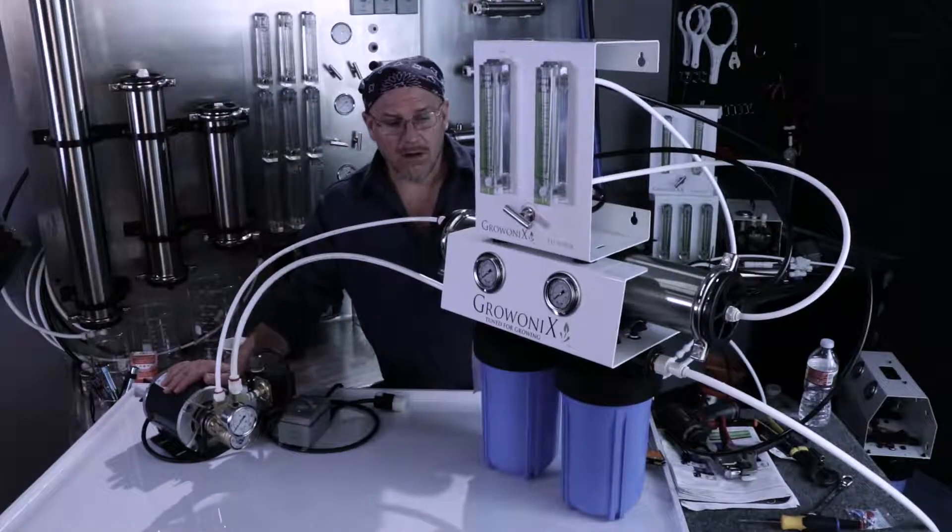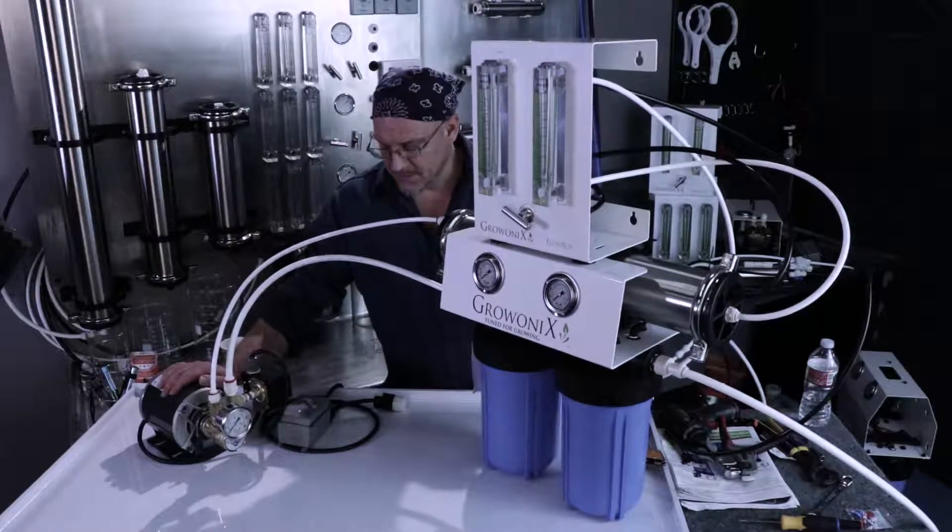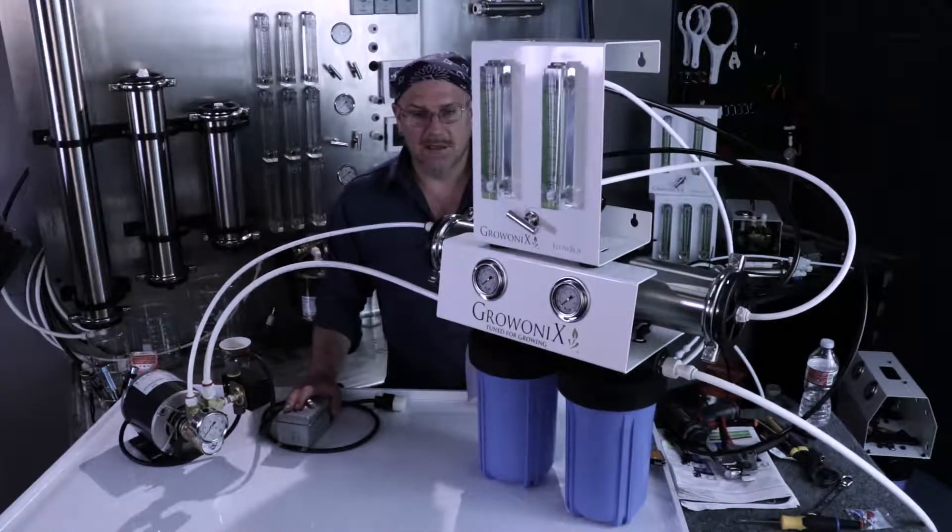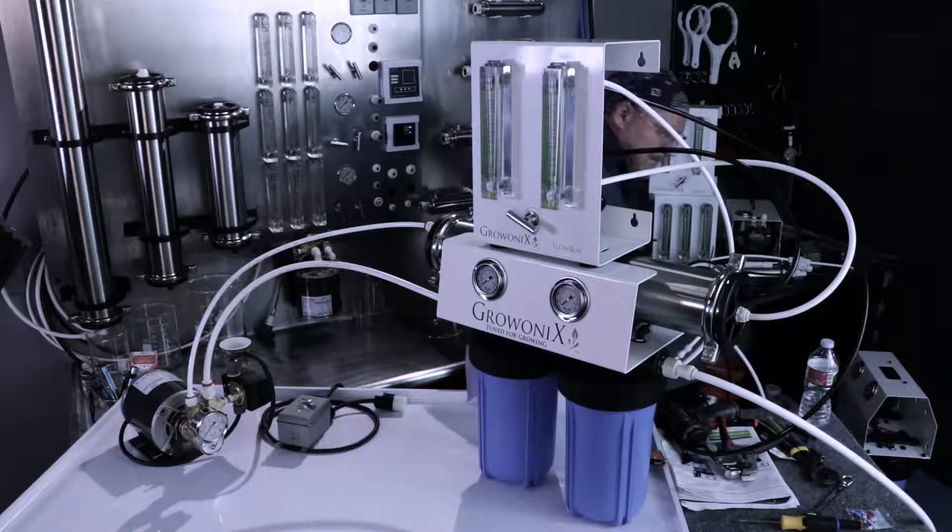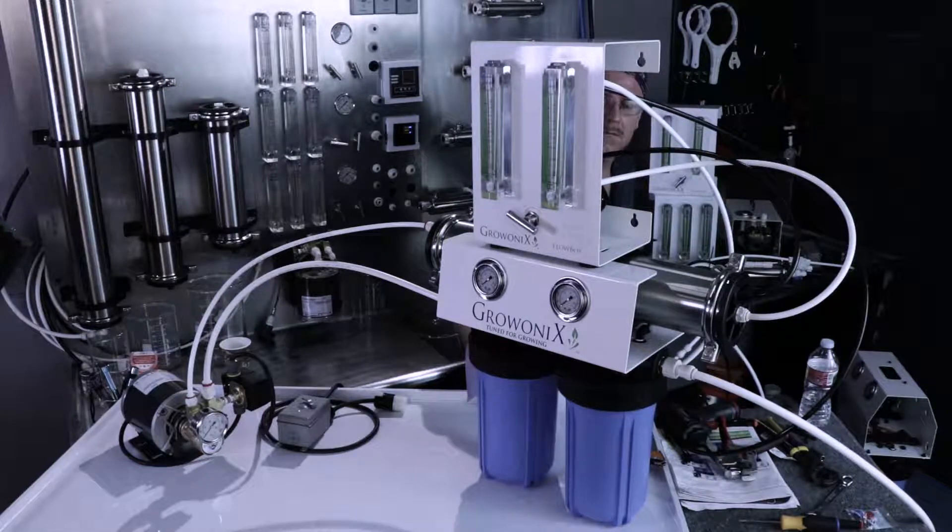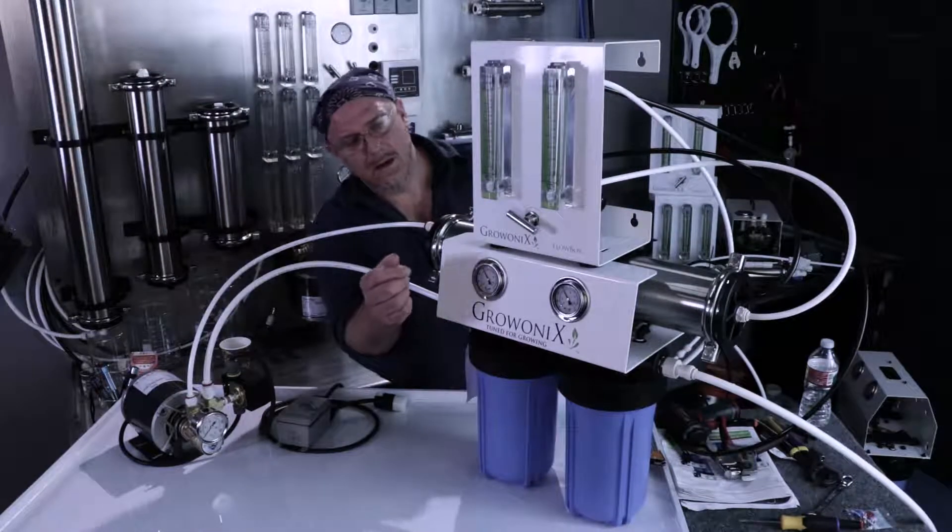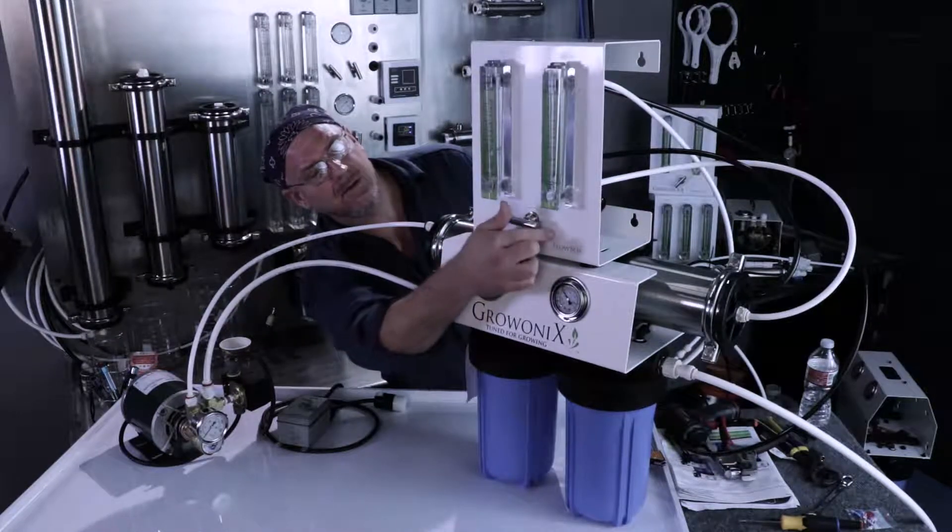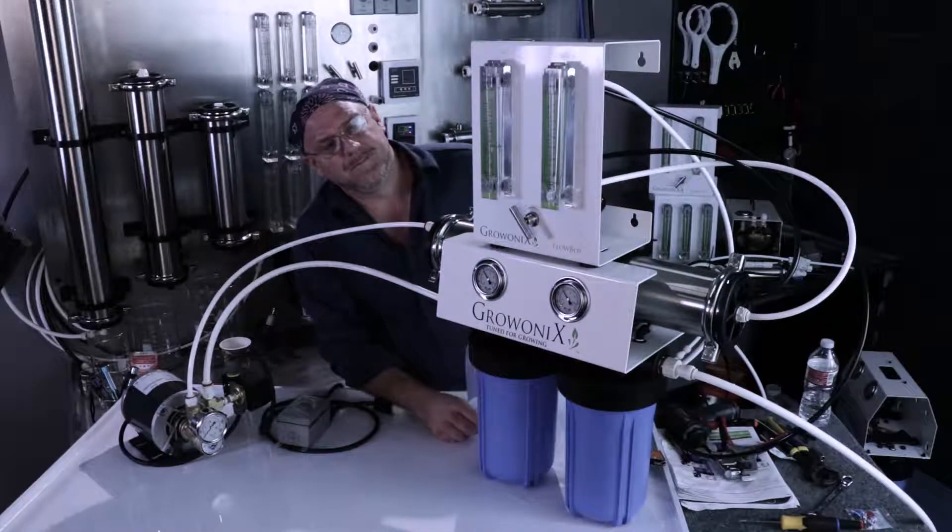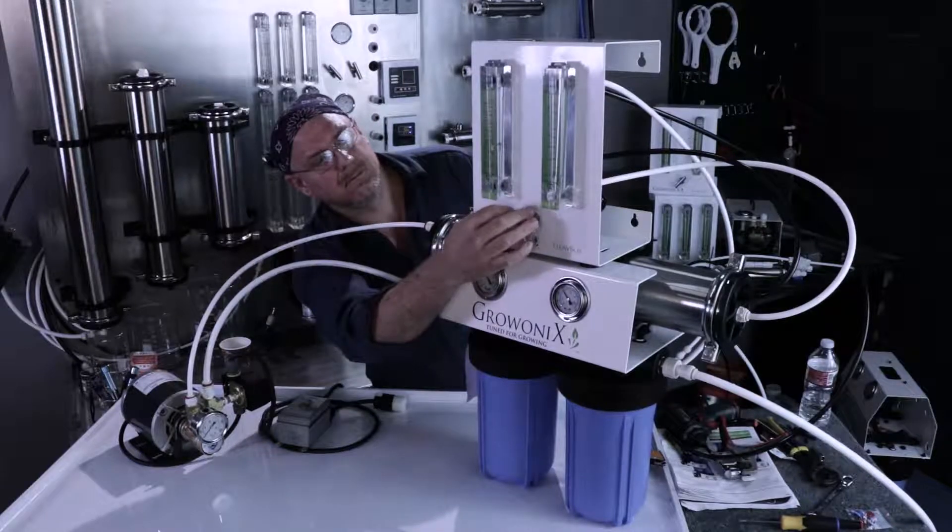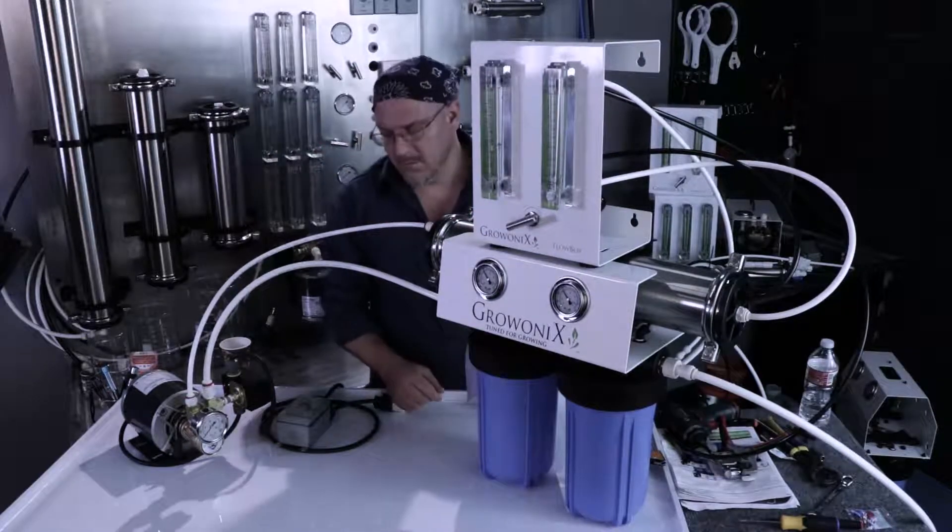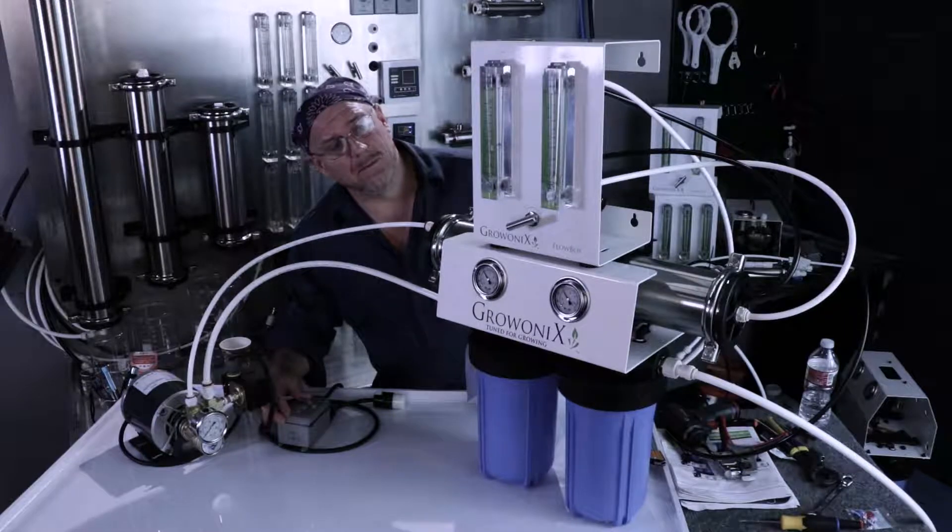Now that the flow box is installed, we're ready to start up this system with a BP 6010 pump. We're going to turn on feed water, open up our drain valve a little bit, and simply turn on the booster pump.